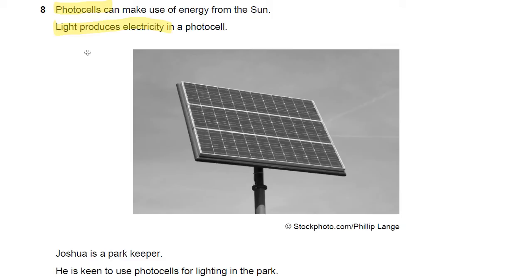So this is question 8 in this OCR Gateway P2 section. Photocells can make use of energy from the sun. Light produces electricity, so light energy turns into electrical energy.